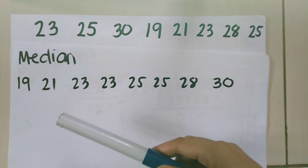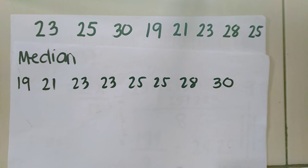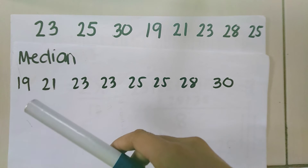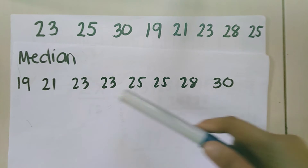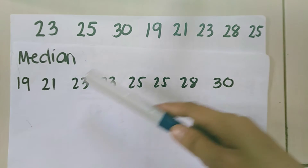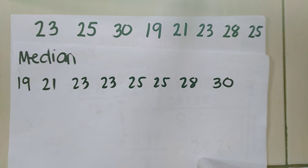Now, in finding the median, we are going to find the middle number. Since the number of data is 1, 2, 3, 4, 5, 6, 7, 8 — since it is 8, and 8 is an even number — we are going to find the 2 middle numbers.